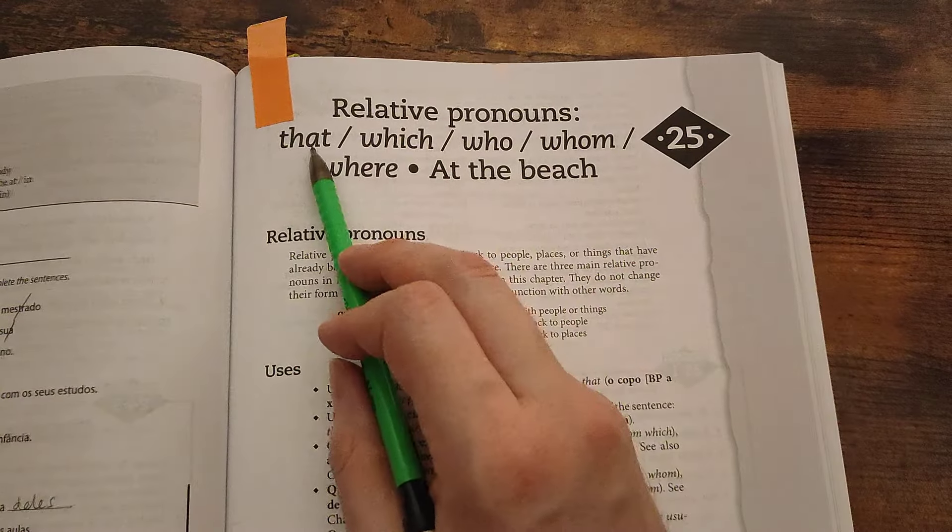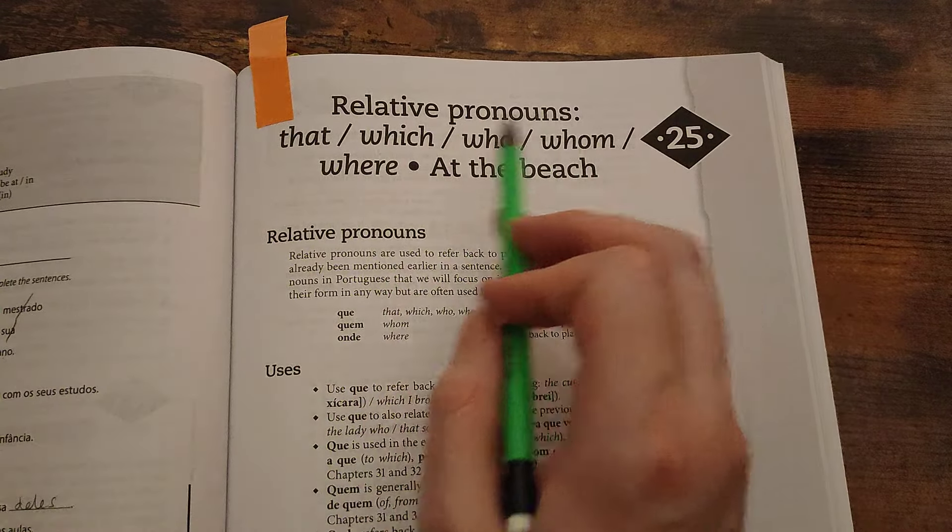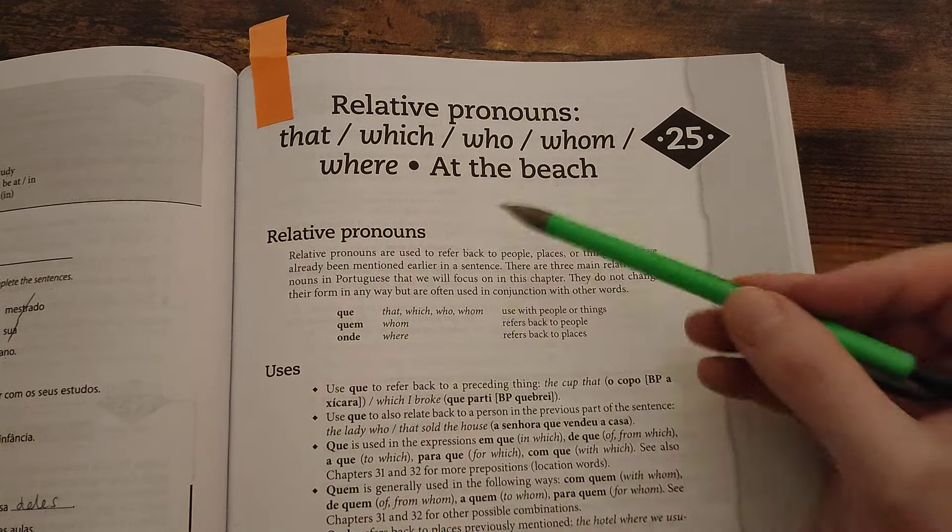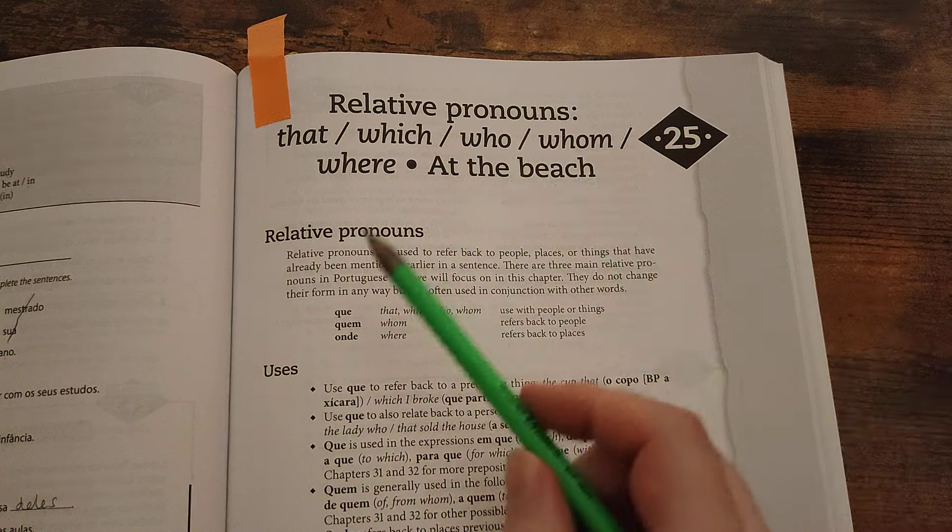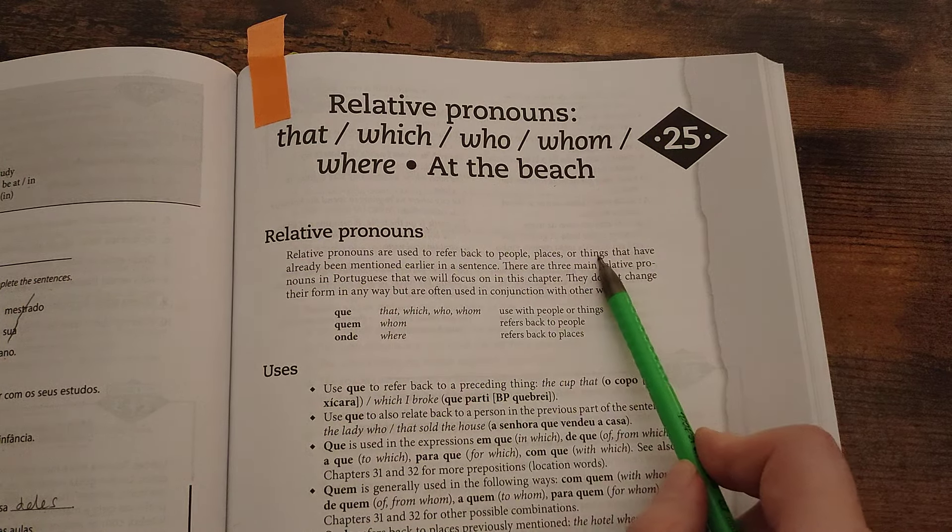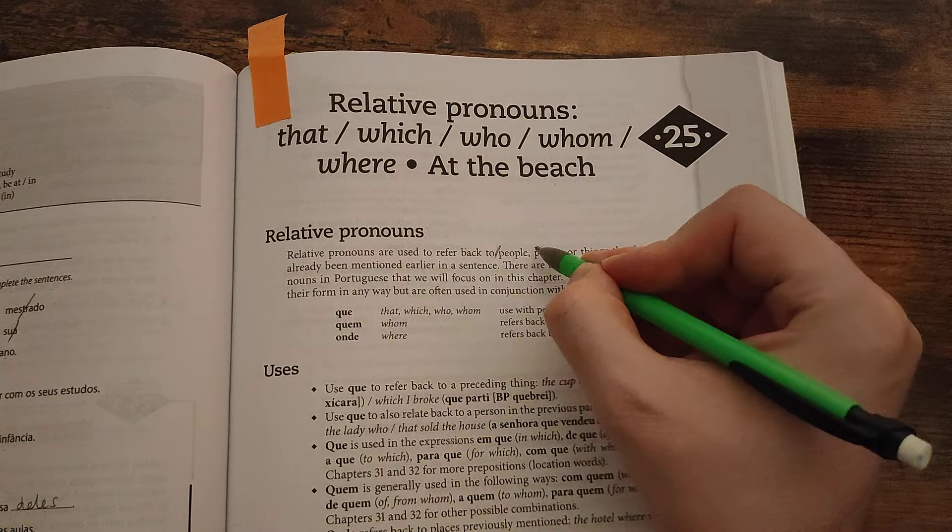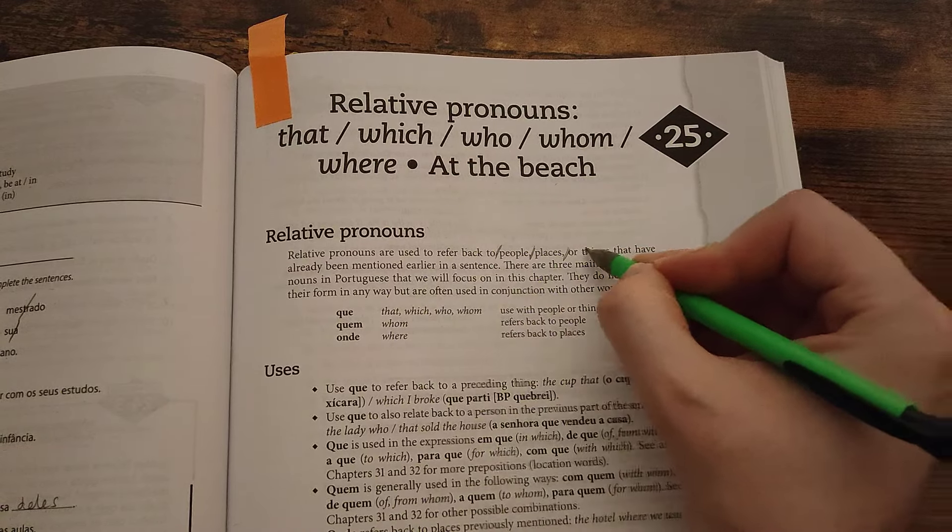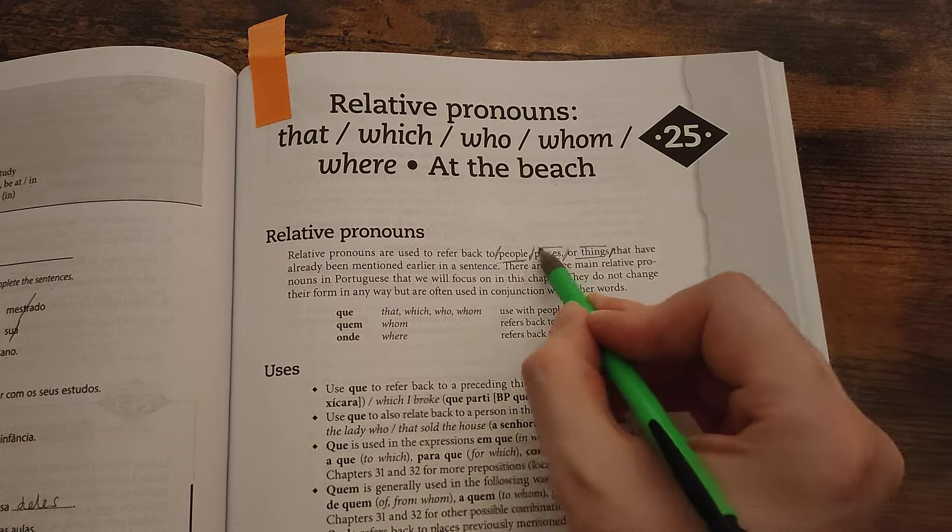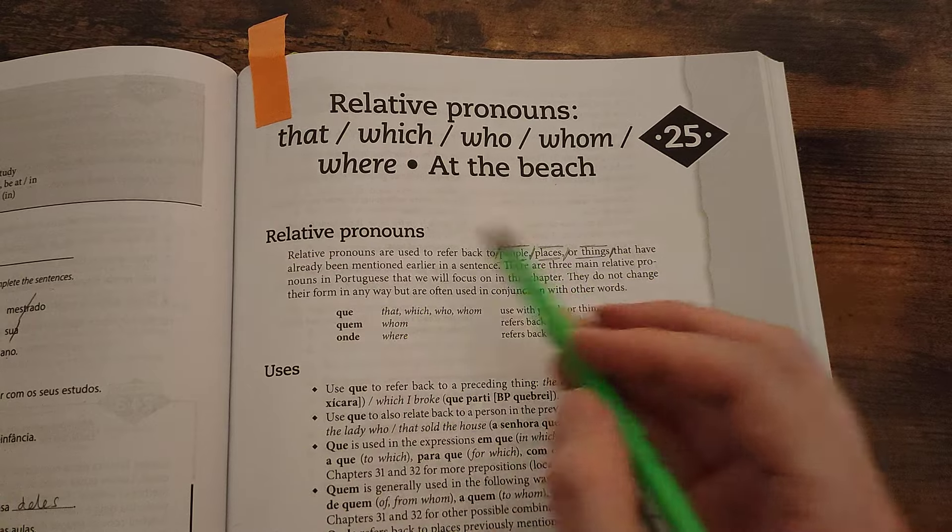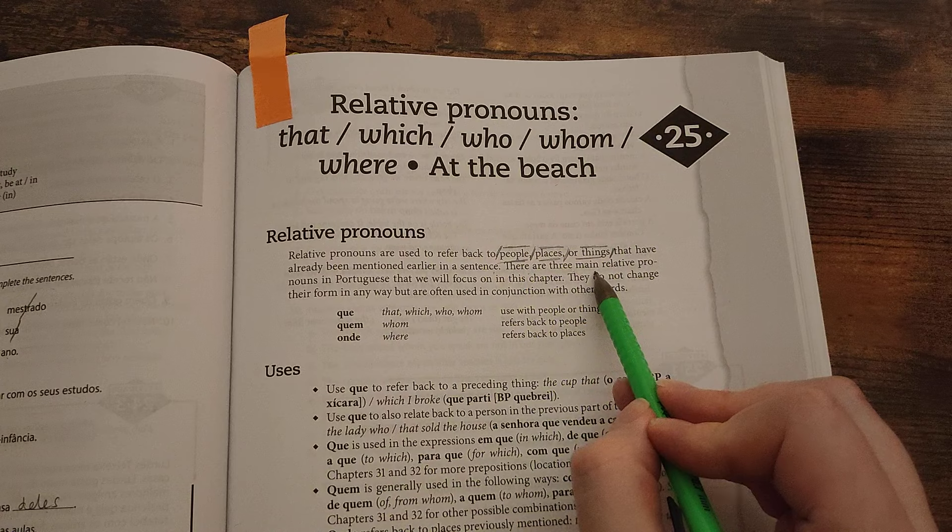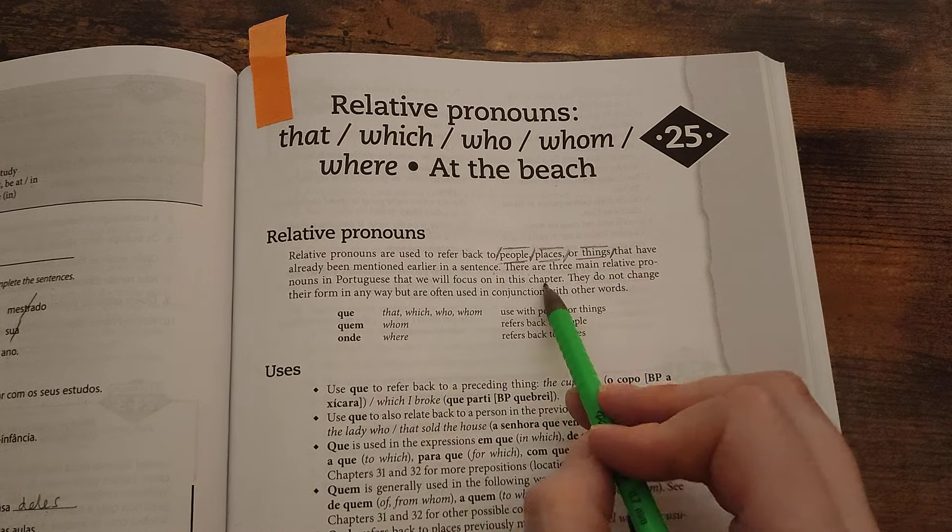Relative pronouns that, which, who, whom, where. Vocabulario at the beach. Relative pronouns are used to refer back to people, places or things that have already been mentioned earlier in a sentence. There are three main relative pronouns in Portuguese that we all focus on in this chapter.